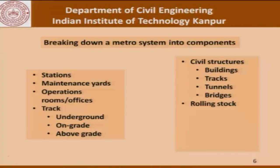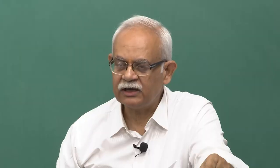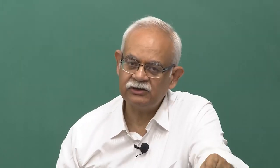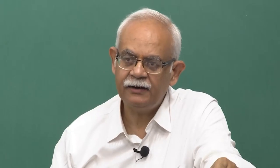Then there is rolling stock, which is definitely not a civil engineering story — it consists of coaches and the locomotives. Besides that, there are controls and monitoring systems, and the entire power network which has to be laid down. Depending on which way we break down a particular system, we will have a better understanding of what kind of expertise is required for executing a project. Execution does not necessarily mean only on-site operations — for rolling stock, the coaches and locomotives have to be procured, and for buildings or tunnels, we need to decide what kind of material to use, which is an engineering decision requiring proper planning and technical consideration.